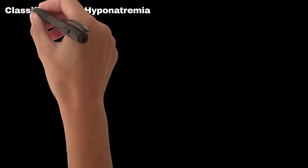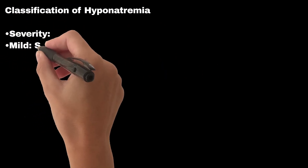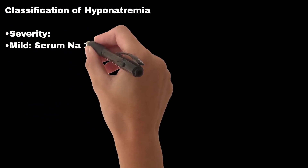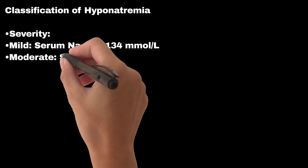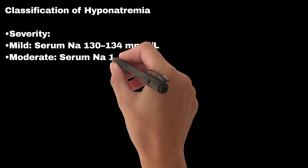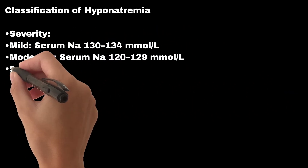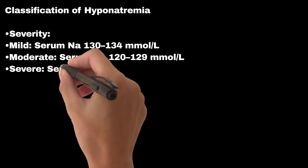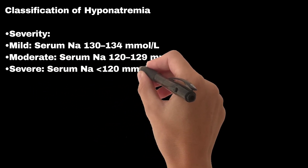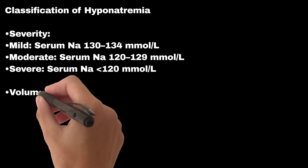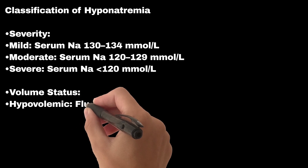Classification by severity: mild — serum sodium 130 to 134 mmol/L; moderate — serum sodium 120 to 129 mmol/L; severe — serum sodium less than 120 mmol/L.